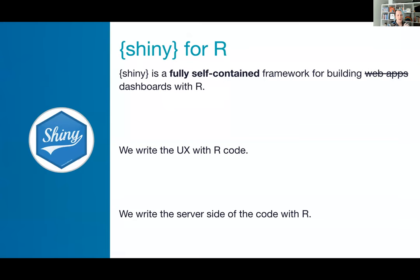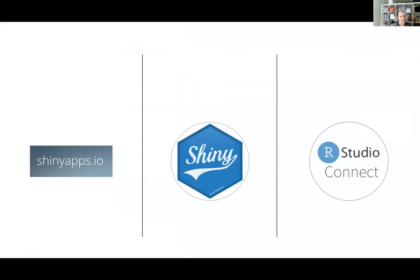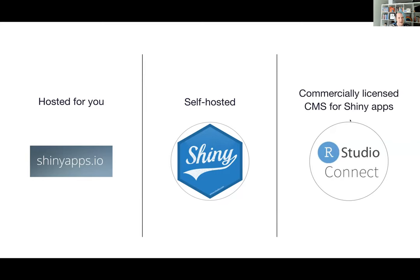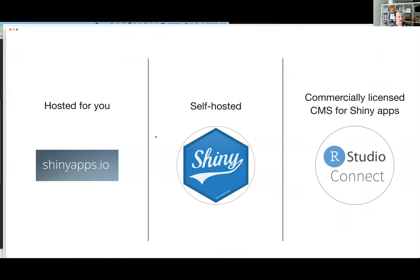Shiny is really exciting because we can build an entire web application using R code — no HTML, CSS, or JavaScript required, and nothing else to set up. There's a recently released R package called Shiny UI Editor that allows you to build up the design of your Shiny app interactively. We've got three different places that Shiny apps can live: shinyapps.io, which is a fully hosted solution; an open-source Shiny Server you can install on a server you control; or RStudio's commercial content management system for Shiny apps.